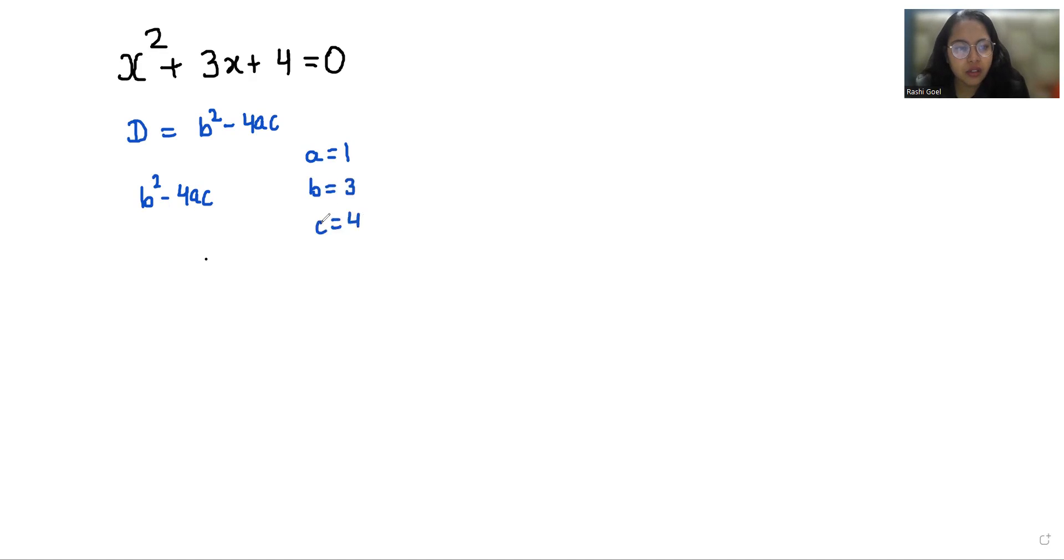So 3² - 4 times 1 times 4, that is 9 - 16 = -7. So it is less than 0, which means no real roots exist.